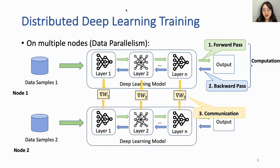In the distributed training case, data parallelism is a common approach. Each node executes forward and backward paths locally — the computation phase. Next, nodes exchange gradients computed locally and synchronously update parameters by stochastic gradient descent (SGD) — the communication phase.